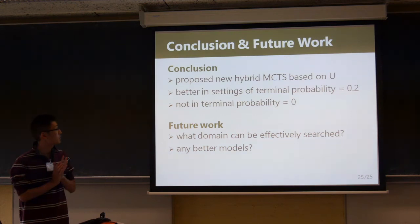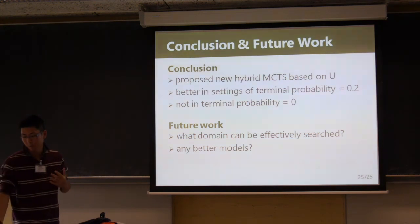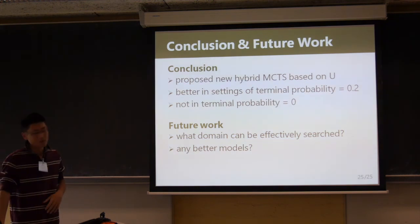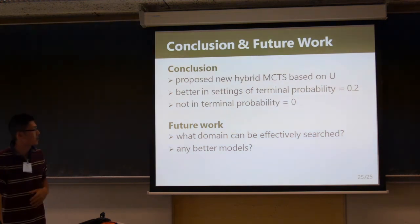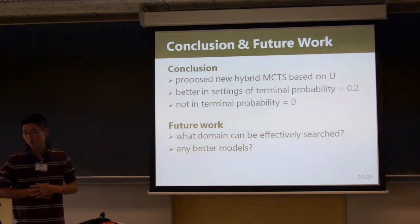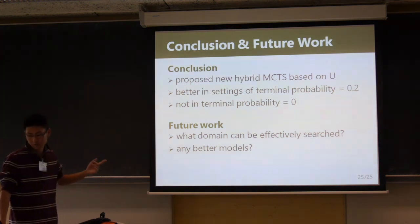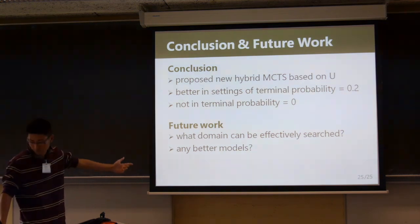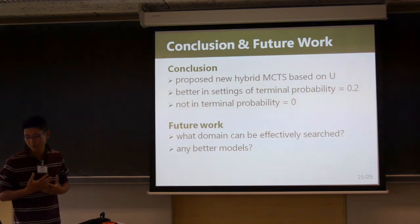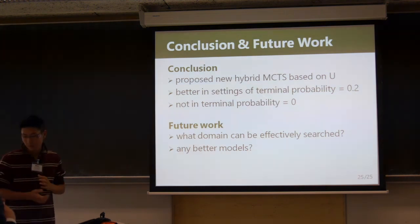In conclusion, we propose a new hybrid MCTS based on U-value. It is better in settings where terminal probability is 0.2, but not when terminal probability is 0. Research of MCTS based on U-value is in the very beginning stage. Open questions include: what domain can be effectively searched by such a method, and is there any better model?